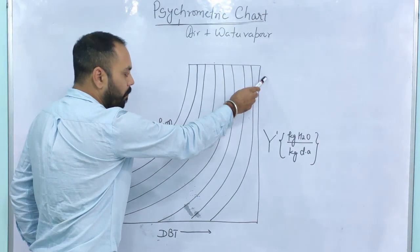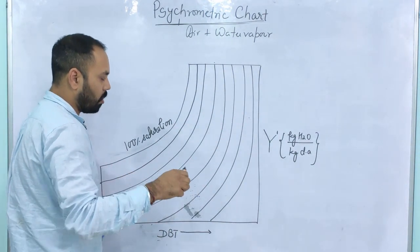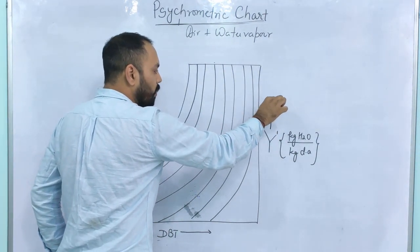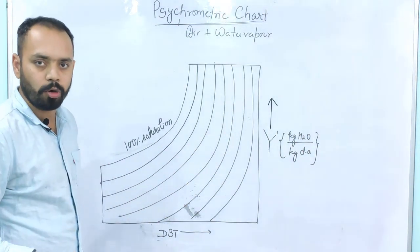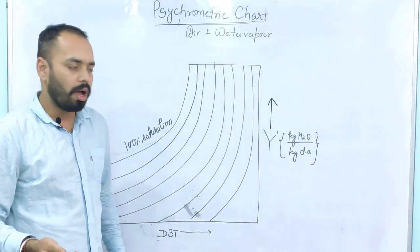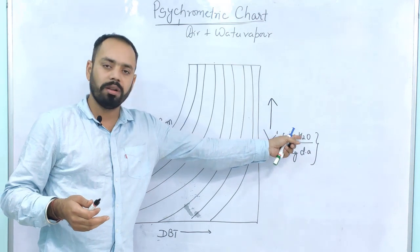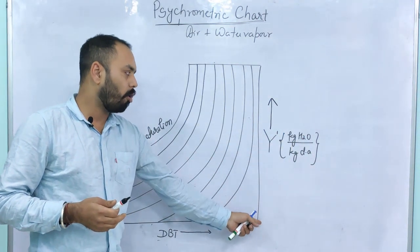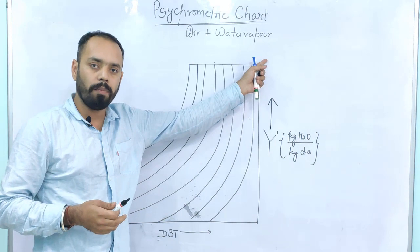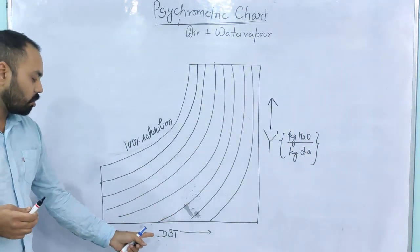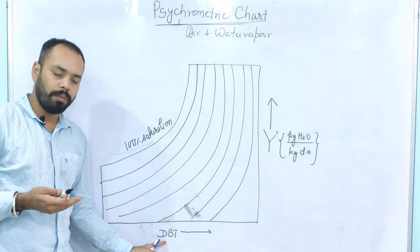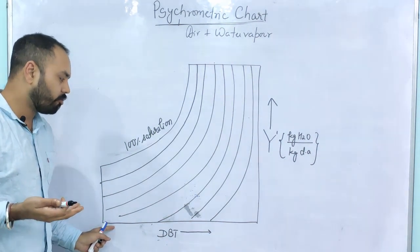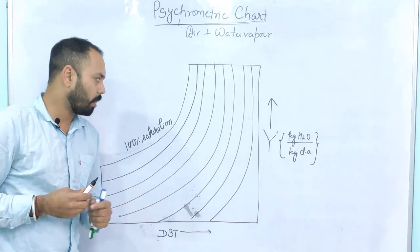The Y-axis has Y', which is called absolute humidity, also known as specific humidity or simply humidity, having the units of kg water vapor per kg dry air, and Y' increases from bottom to top. The X-axis shows the dry bulb temperature of the air vapor mixture and it increases from left to right.